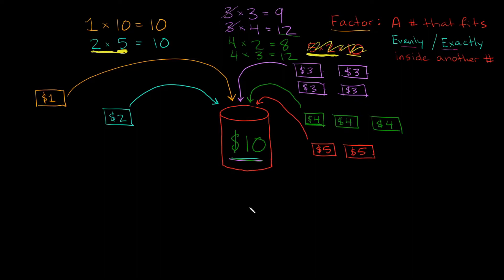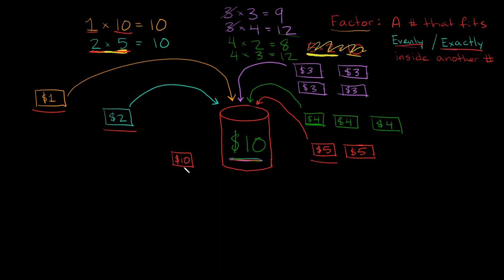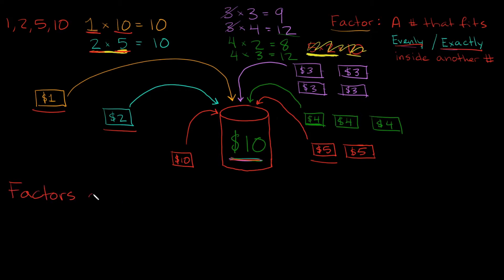So what are the different dollar bills that fit evenly and exactly into my $10 bucket? That'd be the $1 bill, the $2 bill, the $5 bill, and also the $10 bill — because one $10 bill fills the bucket exactly. Now, another way I could have phrased this originally is: what are the factors of 10?